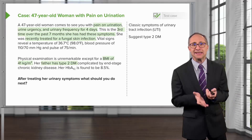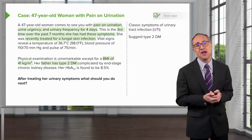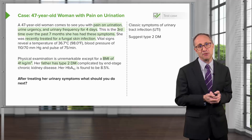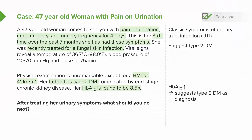We must, however, confirm the diagnosis by repeating her hemoglobin A1c. Rechecking the hemoglobin A1c is the next step, and if it is elevated, one is able to make the diagnosis of type 2 diabetes mellitus.